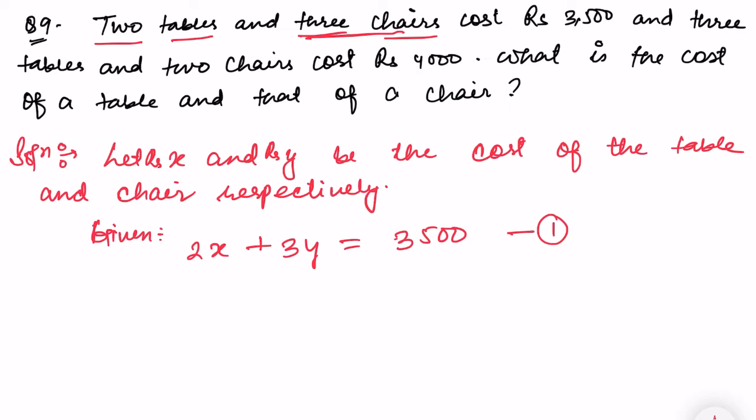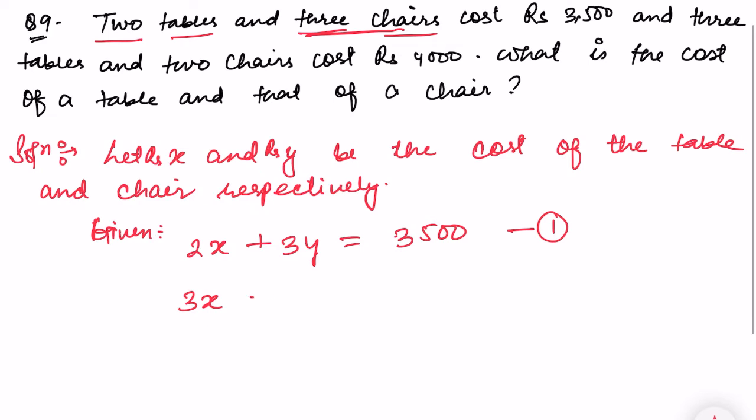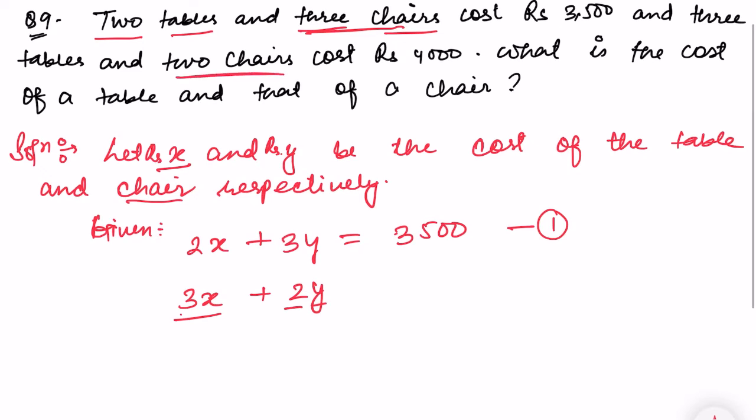And 3 tables and 2 chairs. So I can write down 3x, where x is for table, and 2y, where y is for chair. It equals 4000. So this is equation number 2.